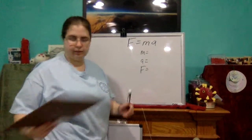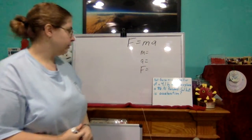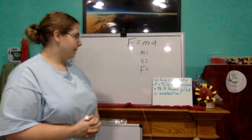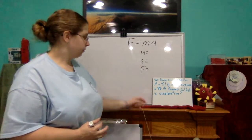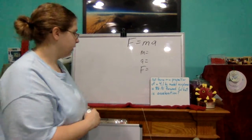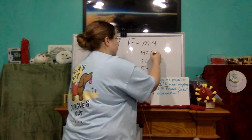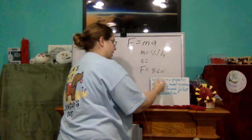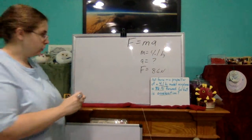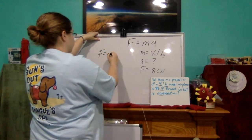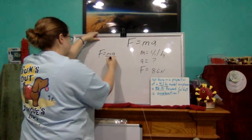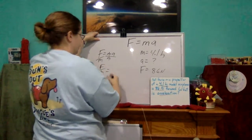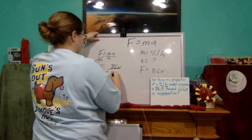Alright, now we have: the net force on a propeller of a 4.1-kilogram model airplane is 8.6 newtons. What is the acceleration? So what do we know? We know the mass — 4.1 kilograms. We know the force — 8.6 newtons. And we're looking for the acceleration. So we have F equals M times A. I want to get A by itself, so I'll divide both sides by M — leaving us with acceleration equals force over mass.